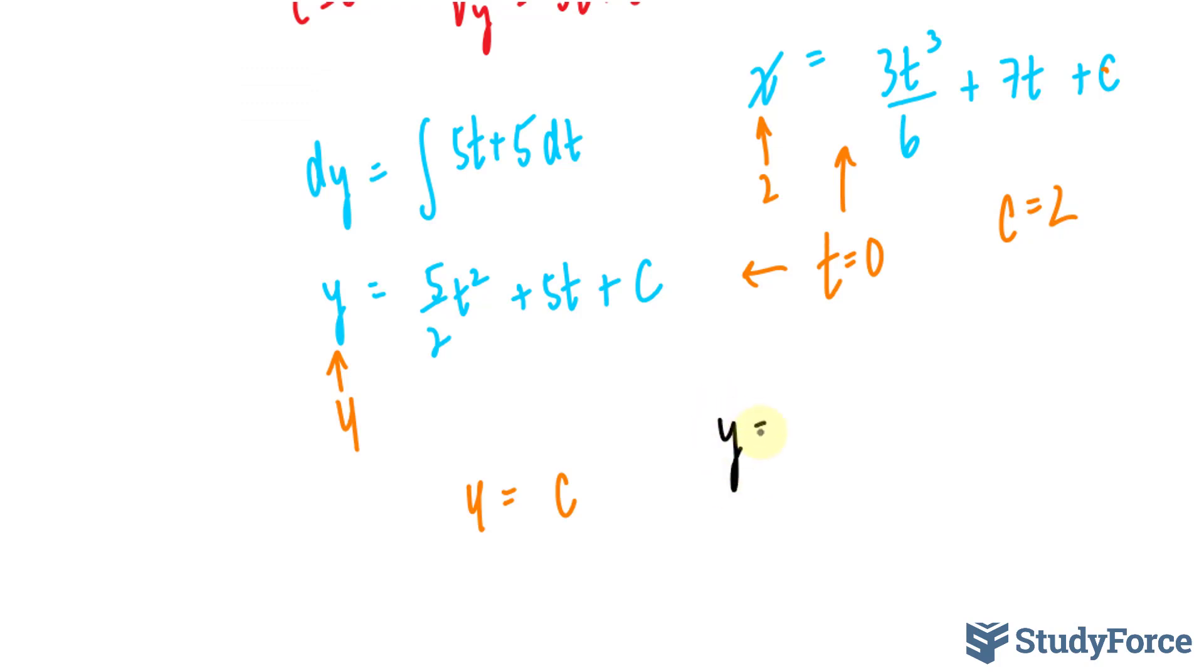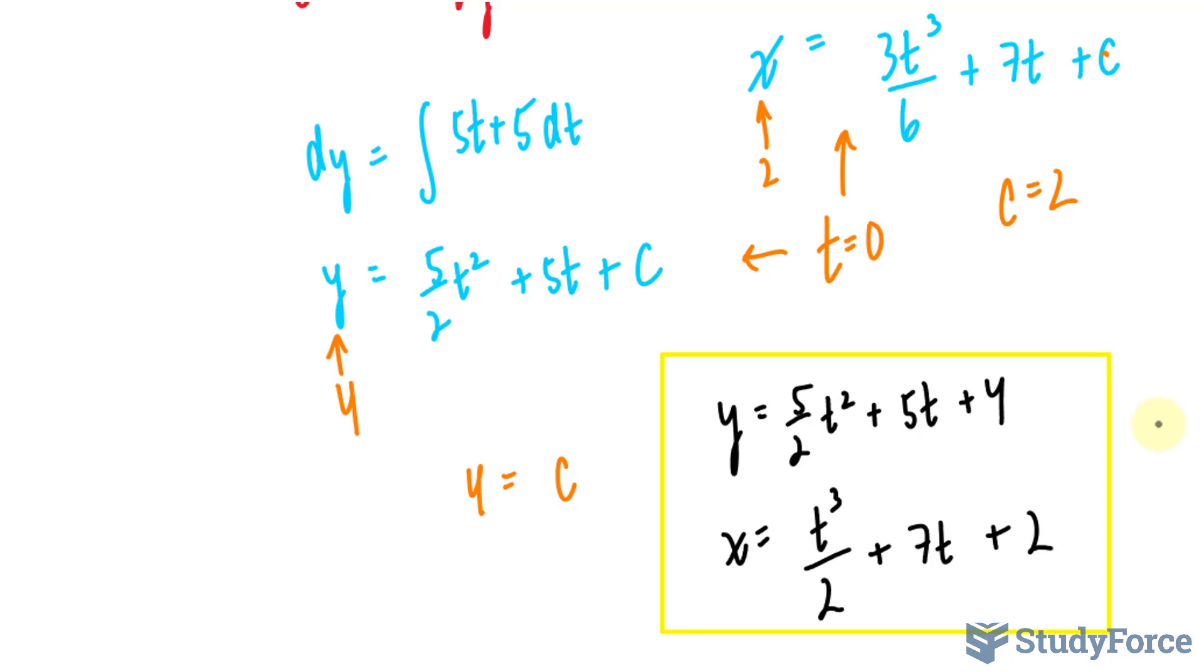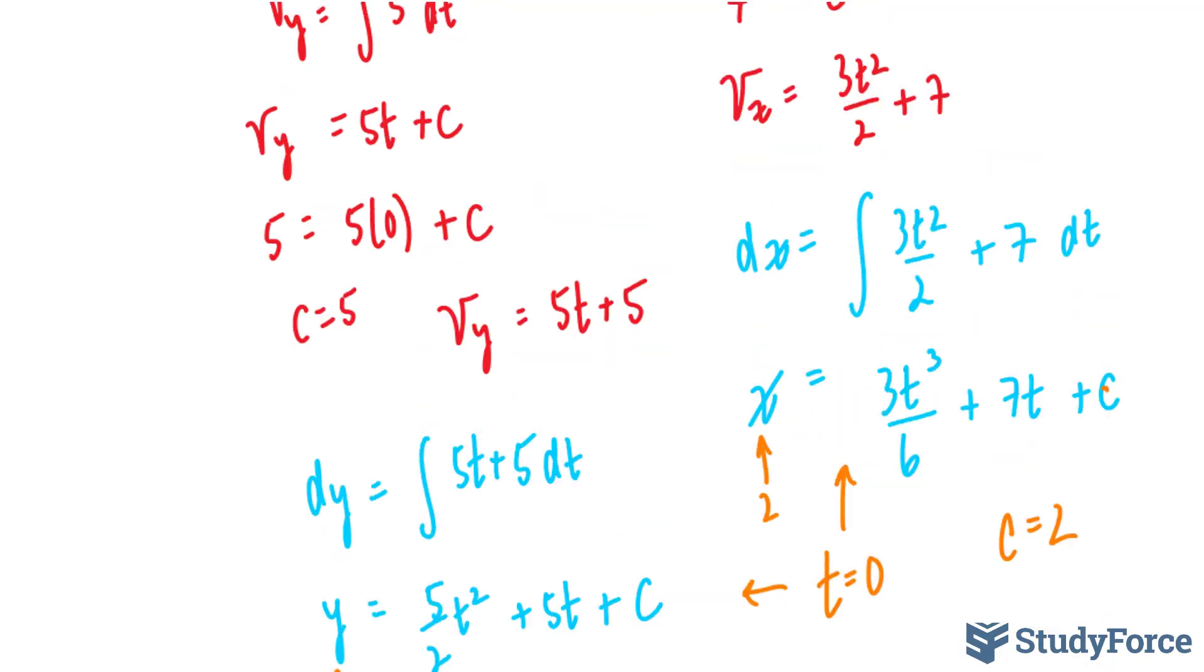y equals 5 over 2t squared plus 5t plus 4, and x equals t to the power of 3 over 2 plus 7t plus 2. I'll put a square around my answer, and those two equations represent my displacement equations for this particle.